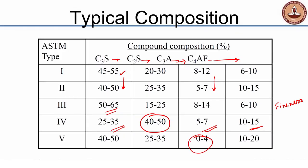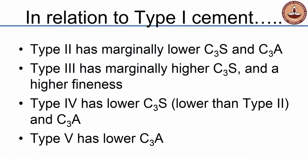Type 5 cement, sulphate resistant cement, owes its resistance primarily to a lowered quantity of C3A — 0 to 4% C3A. Sulphate resistance is brought about by lowering the content of C3A. To summarize: Type 2 has marginally lower C3S and C3A compared to Type 1; Type 3 has marginally higher C3S and higher fineness; Type 4 has lower C3S and C3A; and Type 5 simply has lower C3A compared to Type 1.